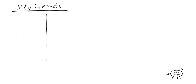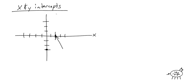Let me make a quick graph and show you what an x and y intercept is. Let's plot two points. What does an intercept mean? An intercept means it's crossing something — like a missile intercepts an enemy plane, it hits that plane. So this first point here is the x-intercept, because it's hitting the x-axis.